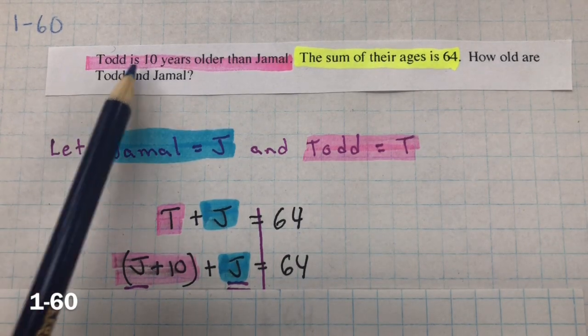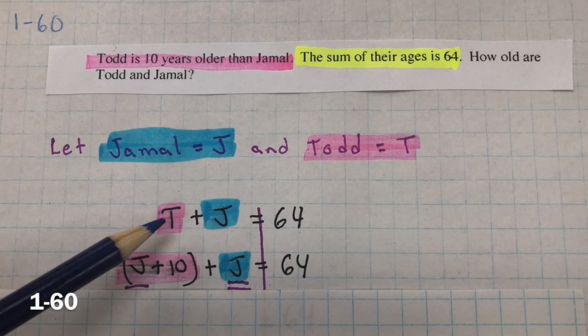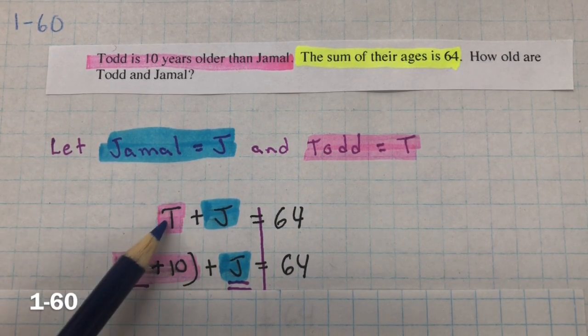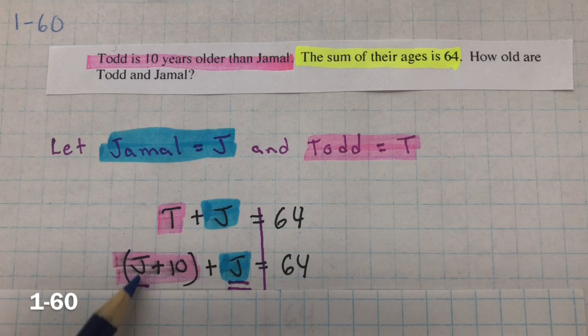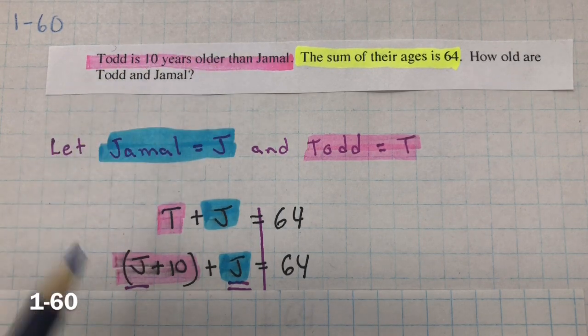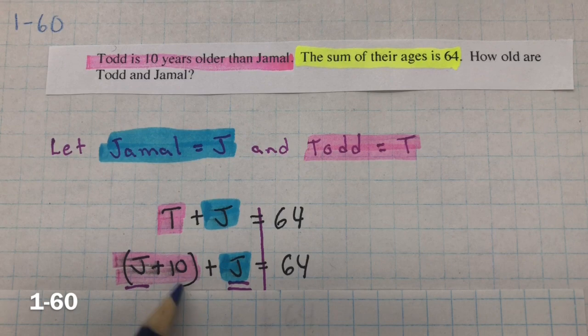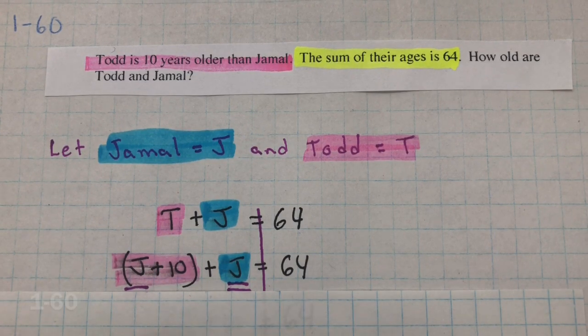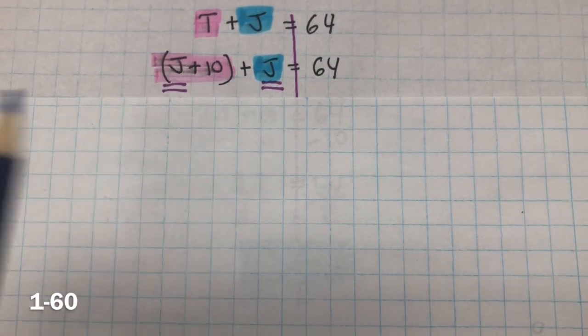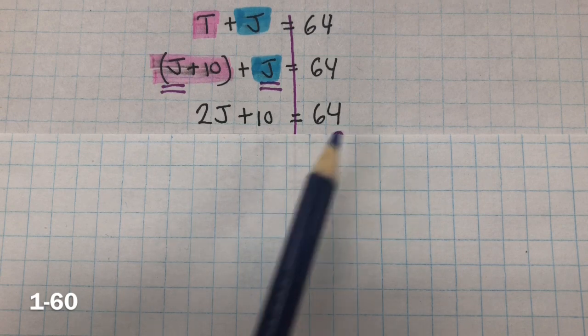We do know that Todd is 10 years older than Jamal. So, Todd is Jamal's age plus 10 years. So, here, instead of to replace Todd, I put Jamal plus 10 years because that's how old Todd is. Todd is 10 years older than Jamal. So, Todd is here and his age is Jamal plus 10 years. And now, we have plus Jamal equals 64. Now, we're going to combine like terms. We have a j and a j. So, we have two j's plus the 10 equals 64.